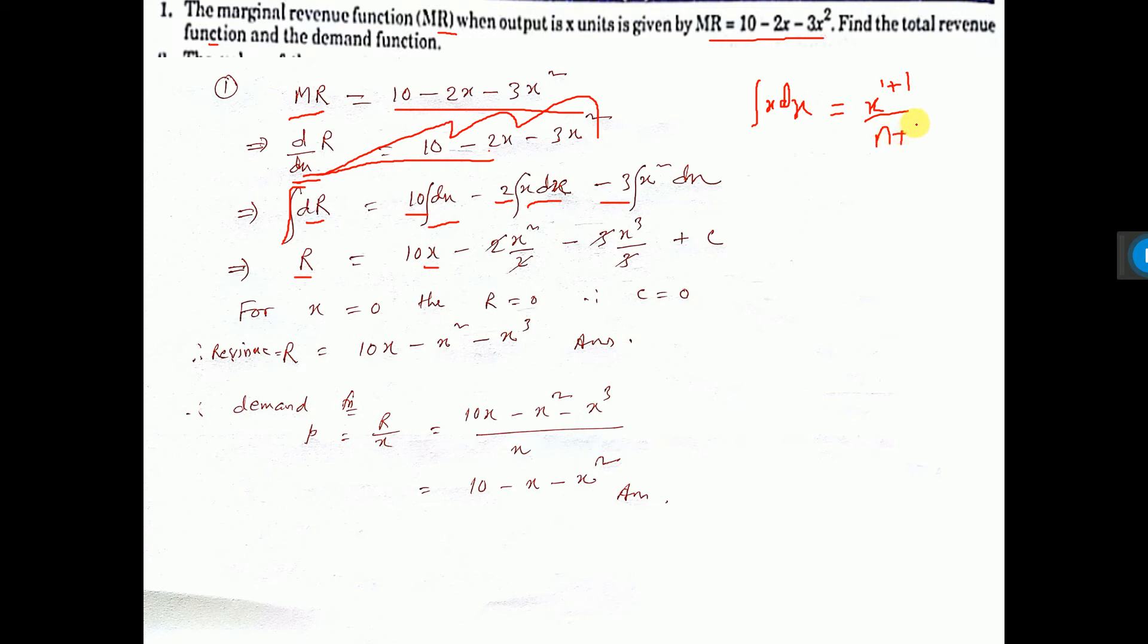Here n, x to the power n, integration x to the power n dx formula: x to the power n plus 1 by n plus 1. So here, power of x is 1, so here will be x to the power 1 plus 1 by 1 plus 1, that is x square by 2, that is written here.